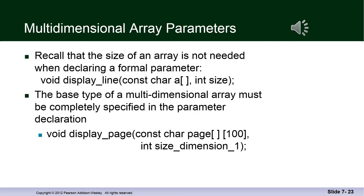You may recall that the size of an array is not needed when declaring a formal parameter, such as the void function display, which has a character array and a second parameter that is an integer. However, the base type of a multi-dimensional array must be completely specified in the parameter declaration. So here's an example of that multi-dimensional array named page being declared as a parameter in a void function named display_page.